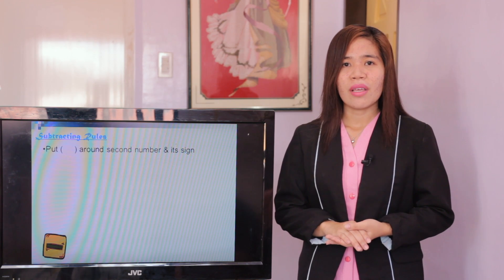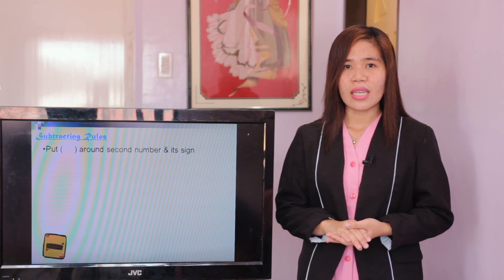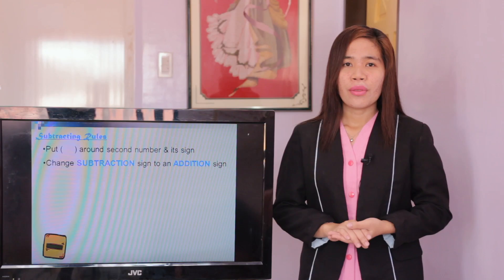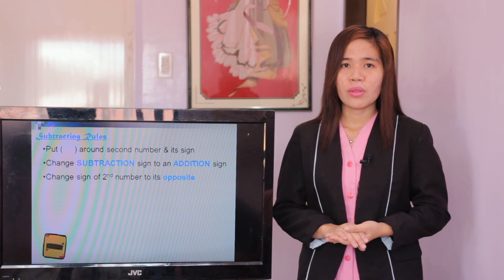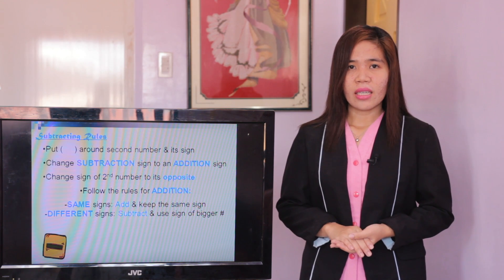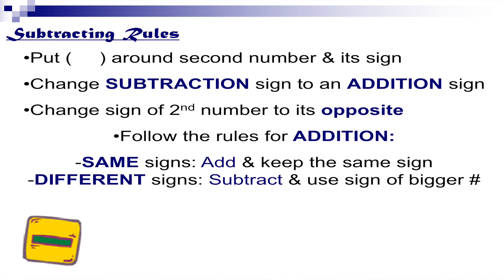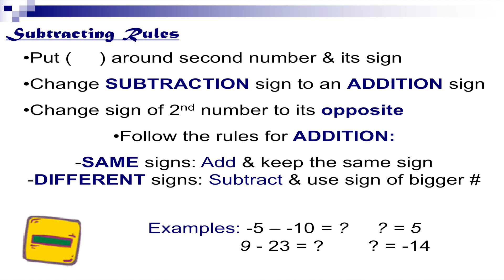The second operation is subtraction. Subtracting rules: first, put an open and close parenthesis around the second number and its sign. Second, change the subtraction sign to an addition sign. Third, change the sign of the second number to its opposite and follow the rules of addition. Same signs: add and keep the same sign. Different signs: subtract and use the sign of the bigger number. Examples: negative 5 minus negative 10 equals positive 5. Positive 9 minus positive 23 equals negative 14.